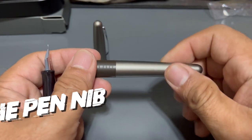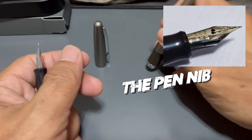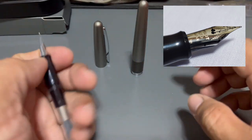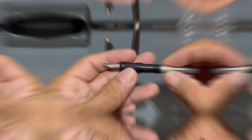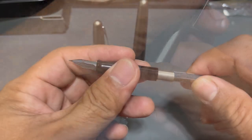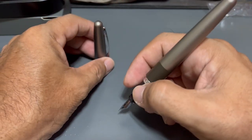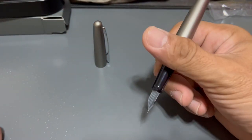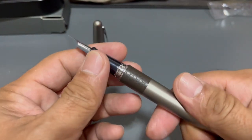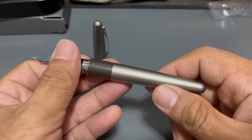The nib on this pen is a stainless steel nib. It has the PILOT logo engraved on it. The nib feed is made of plastic. It is a medium pen barrel which makes it comfortable to hold the pen. The grip is easy to hold and not slippery.